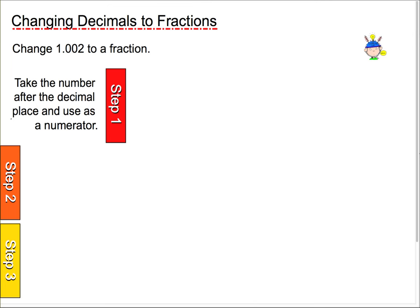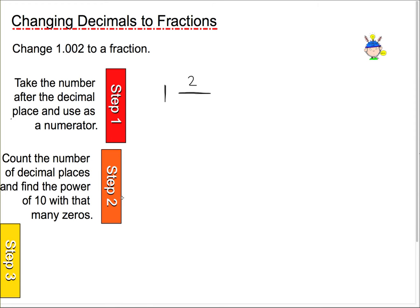So, the number in front of the decimal place, we're going to leave as 1. And then the number after the decimal place, 2, I'm going to use that as a numerator. We have to figure out what has to go underneath it, though. So, what's step 2 say?